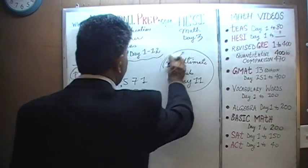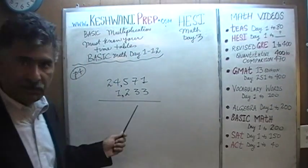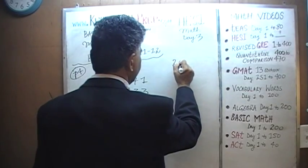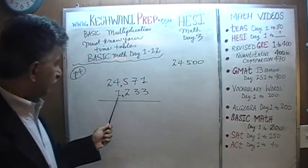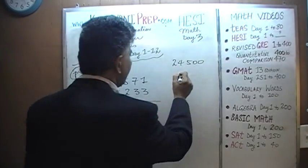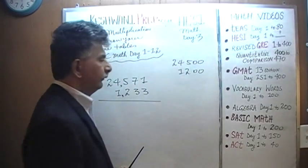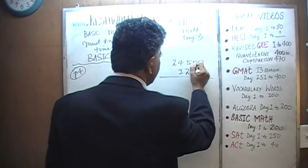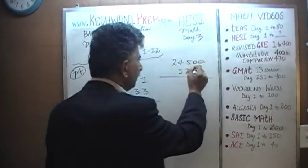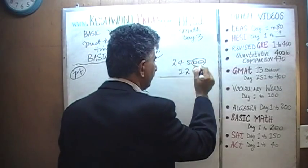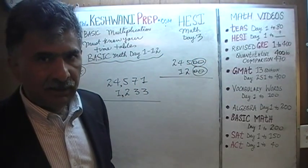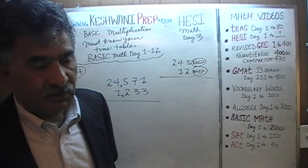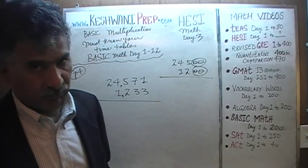Which is exactly what we are going to do here. Instead of doing out the whole thing, let's pretend that this is 24,500 and instead of 1,233, let's pretend that it is simply 1,200. The next thing we're going to do is simply ignore the two zeros from 24,500 and the two zeros from 1,200. At the end when we get the answer, we're simply going to stick those four zeros back onto our answer and we'll be done.